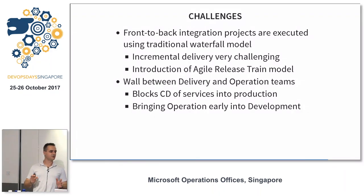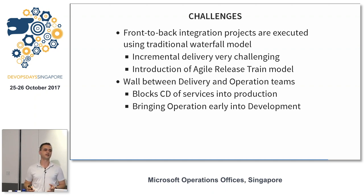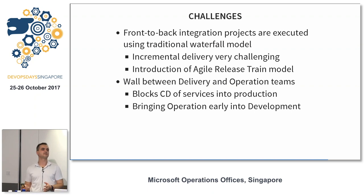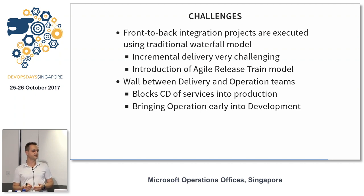We had tons of challenges and still have them. One was that front-to-back integration projects were executed using the traditional waterfall model — not just the enterprise service bus team but consumers and providers too. Some consumers can be fast, but you're only as fast as your slowest consumer or provider. Incremental delivery is very challenging. We tried to introduce an agile release train model to mitigate this. We also have a huge wall between delivery and operation teams — a classical problem.